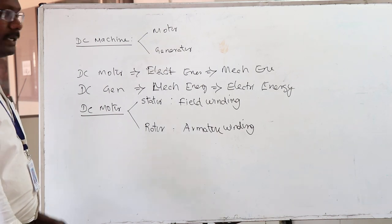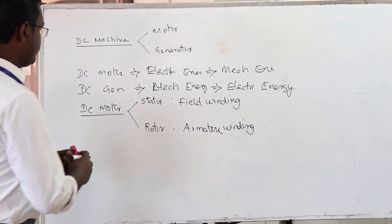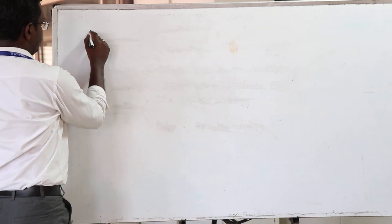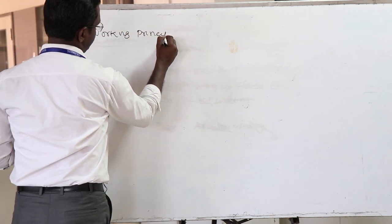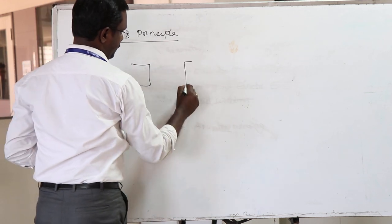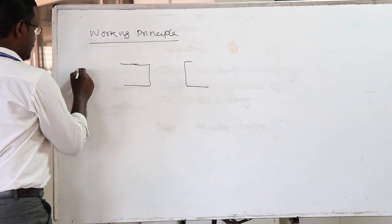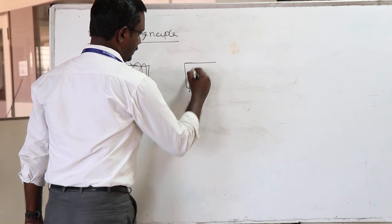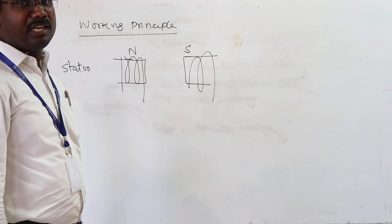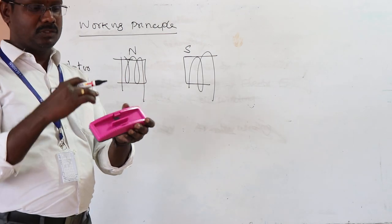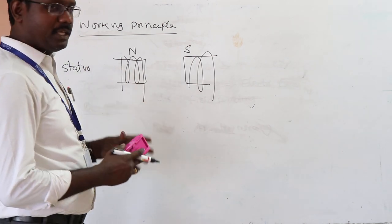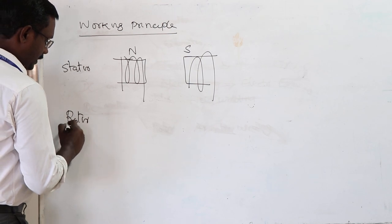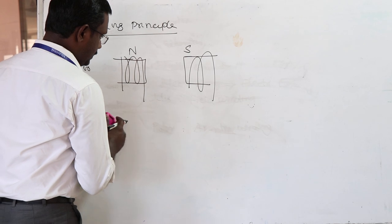Now we are going to discuss about the working principle of DC motor. The two main parts are the stator — that is the field winding, which is the magnetic region — and the rotor, which is the rotating part.